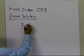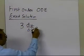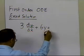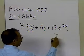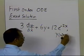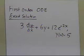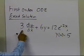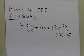Suppose somebody gives me a differential equation like this: 3 dy/dx plus 6y is equal to 12e to the power minus 2x, with the initial condition y(0) equal to 5. The coefficients are constant — 3 and 6 — and I'm going to use the classical solution techniques of finding the homogeneous part and the particular part.